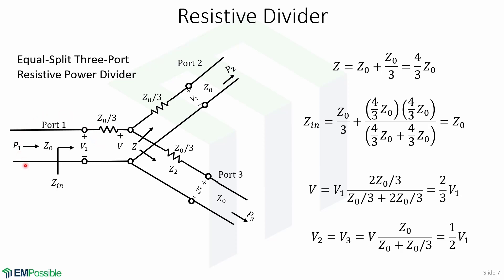We assume that all ports are terminated with transmission lines with characteristic impedance Z0. Then Z is impedance looking into ports 2 and 3, which is the series combination of Z0 and Z0 over 3.